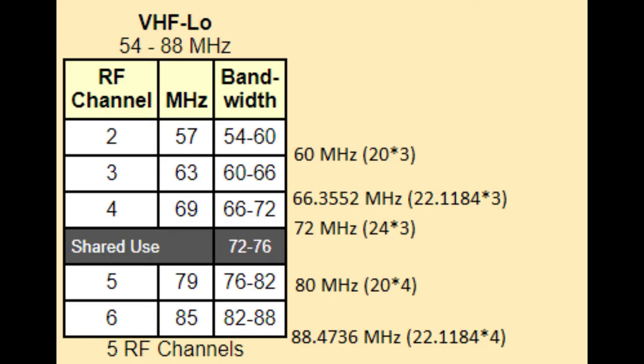Now we can get back to the circuit. I will be trying to target frequencies in the Low VHF section. Because I don't have any crystals specifically meant to resonate in those frequencies, I will be using harmonics. Looking through my crystal set and doing some math, I found the best crystals to use will be 20, 24, and 22.1184 MHz. I chose to use the 22.1184 MHz crystal, and it has a triple harmonic somewhere in channel 3.